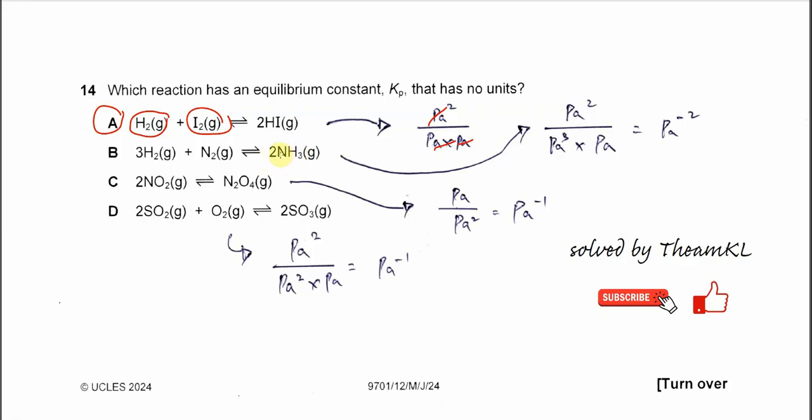For B, the answer is Pascal squared because the coefficient is 2, so it's Pascal squared over the partial pressure of hydrogen. Because its coefficient is 3, it's Pascal cubed times Pascal, giving you Pascal to the power of negative 2.